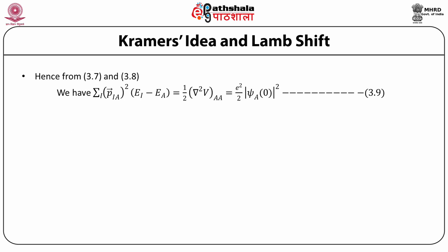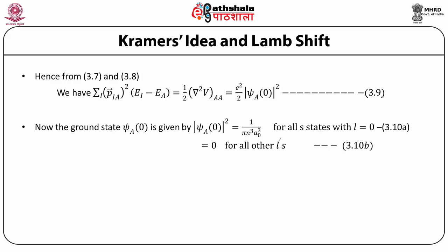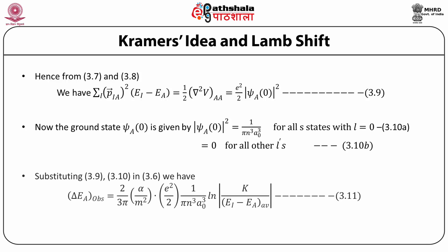Hence from equations 3.7 and 3.8 we have sum over all i of P_ia squared into (Ei minus Ea) equals one half of delta squared V between states a and a, which equals e squared by 2 into |psi_a at the point 0|  whole squared. Now the ground state |psi_a(0)|  squared equals 1 over pi n cubed a-naught cubed for all s states with l equal to 0, but it equals 0 for all other l's.